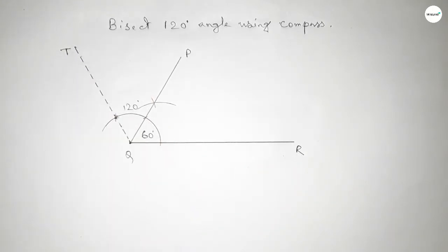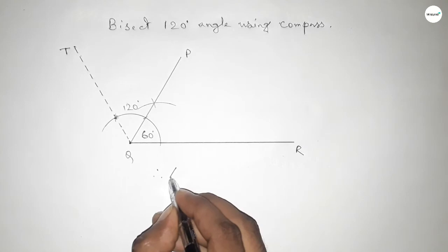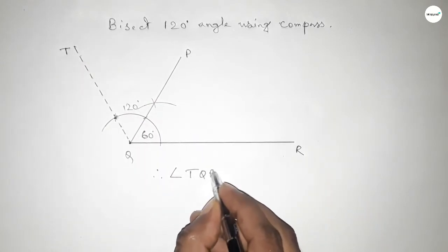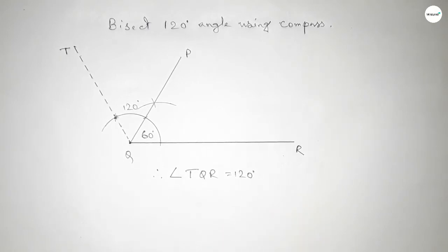Therefore, angle TQR equals 120 degrees, and angle PQR equals 60 degrees.